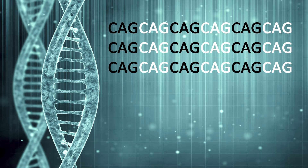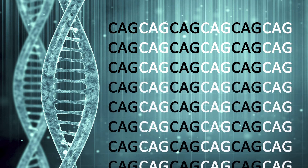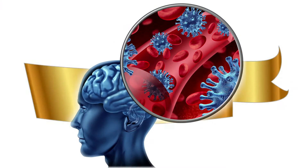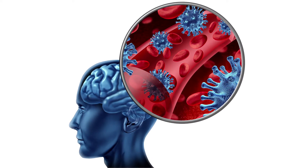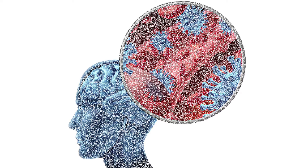In individuals affected with the disease, the number of times this CAG triplet is repeated is abnormally high, keeping the protein it produces from functioning normally. This protein even appears to be toxic to brain cells.